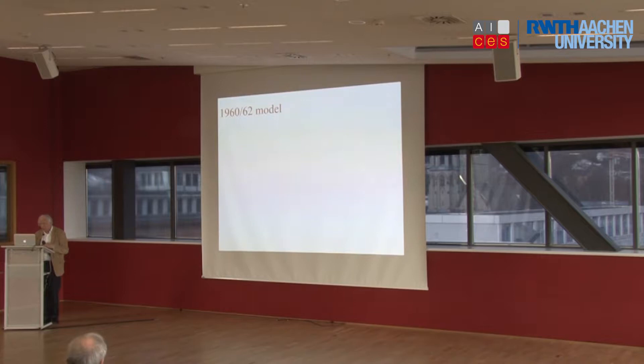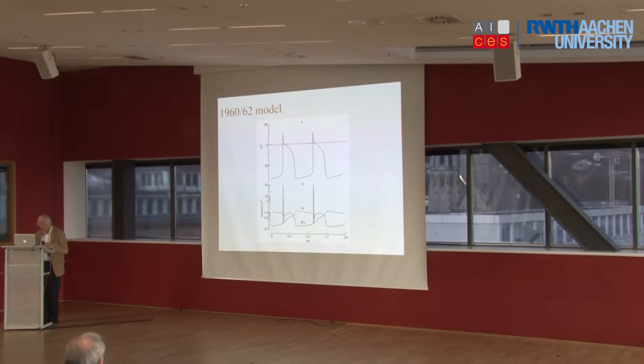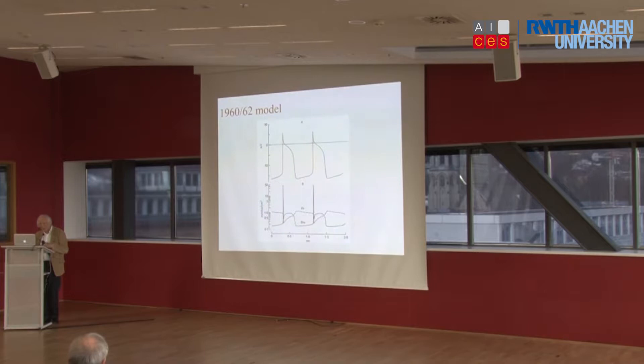That led to the 1960 — or sometimes called the 1962 — model, which did indeed succeed in reproducing the rhythm in the conducting system of the heart called the Purkinje system, in terms of the variations over time of some of the channels. What you see there is the sodium channel and the two potassium channels. The voltage trace fits very well to the voltage trace of an experimental recording.